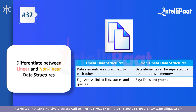Question thirty-two: differentiate between linear and non-linear data structures. A linear data structure stores data next to each other in an ordered fashion — arrays, linked lists, stacks, and queues are examples. A non-linear data structure stores data in a way where elements are not adjacent to each other — graph and tree data structures are examples. Make sure to give examples to support your understanding of both, as visualizing them makes the difference very clear.